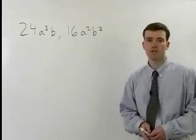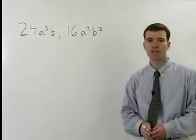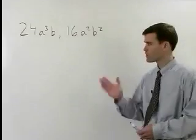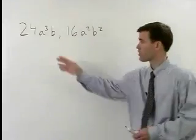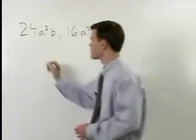To find the greatest common factor between these two monomials, we're just going to combine some of the ideas that we've used so far in this section. First of all, let's take a look at the numbers or the coefficients 24 and 16 and set up a factor tree for each of those.